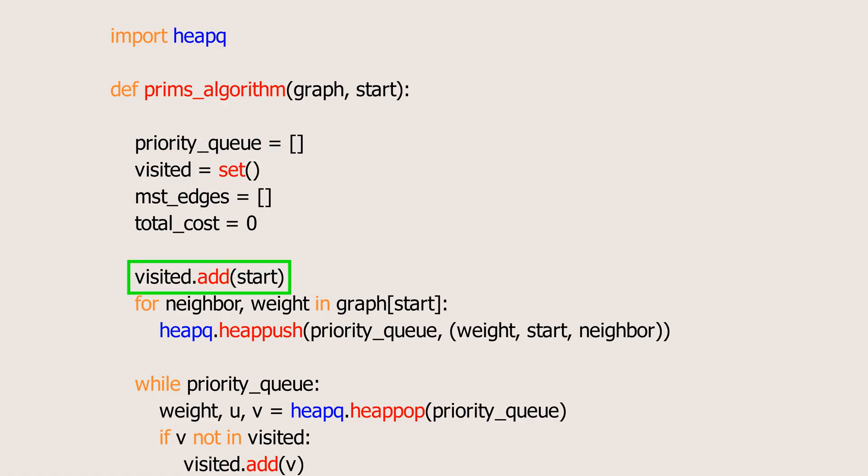We add the starting node to the visited set and push its neighboring edges along with their weights onto the priority queue. This assumes the graph is stored in an adjacency list.